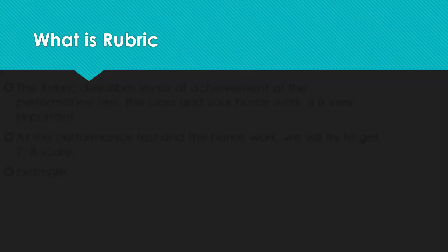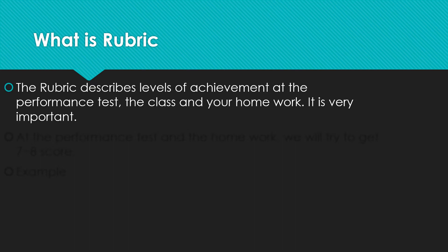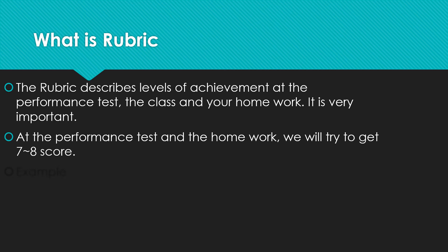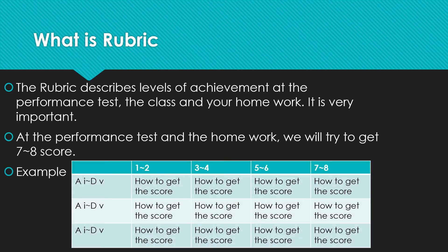First, I will talk about what is the rubric. The rubric describes levels of achievement at the performance test, the class and your homework. It is very important for Moist students. At the performance test and the homework, we will try to get 7 to 8 scores. This is an example for a rubric. At the rubric, the teacher will show us A1 to D5 and how to get the score.